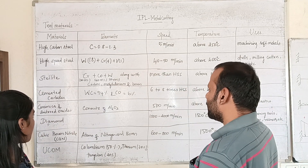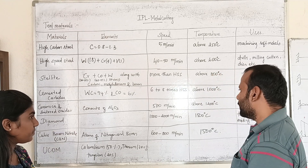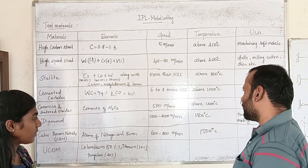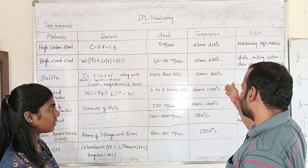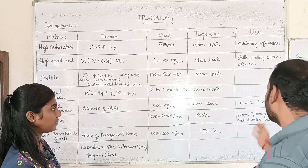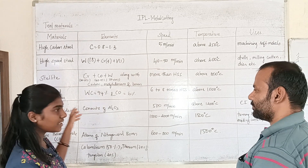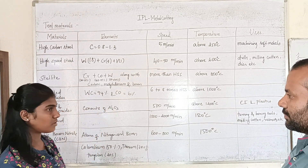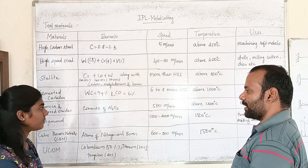Ceramic and sintered oxide is processed by powder metallurgy. The speed is about 500 meters per minute and the temperature is about 1200 degrees Celsius. It is used for cast and plastic. It has a negative rake angle.